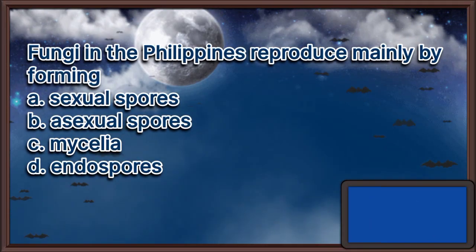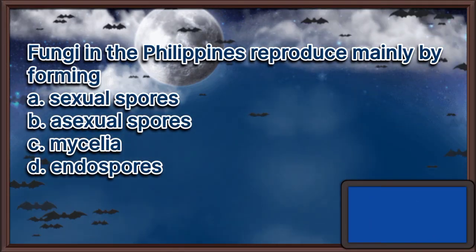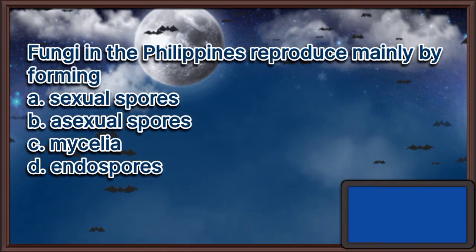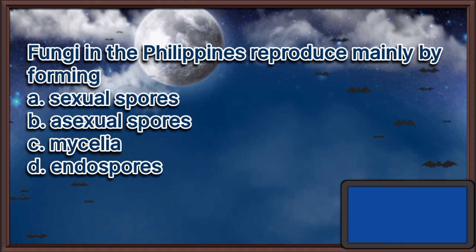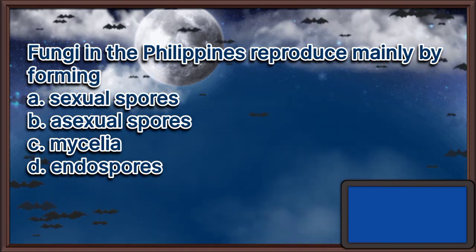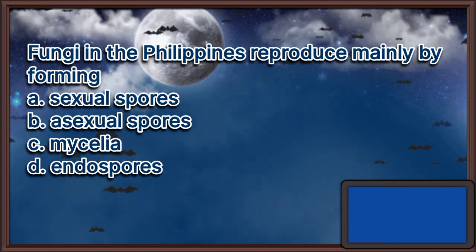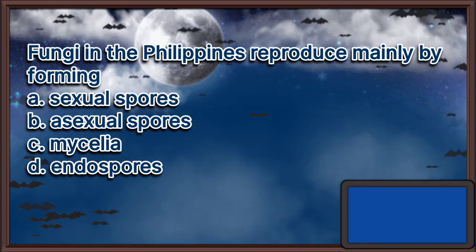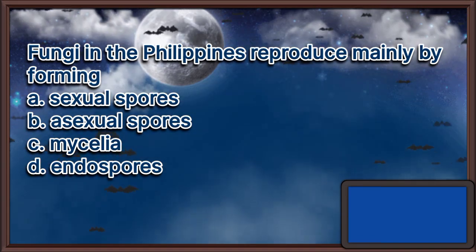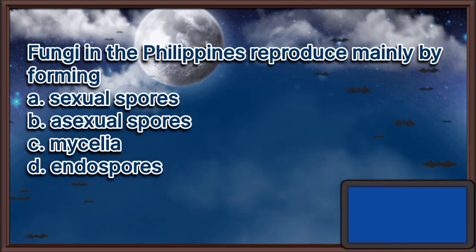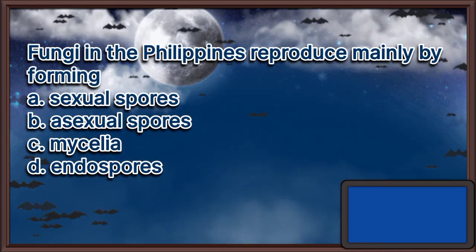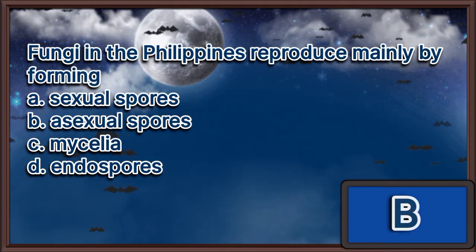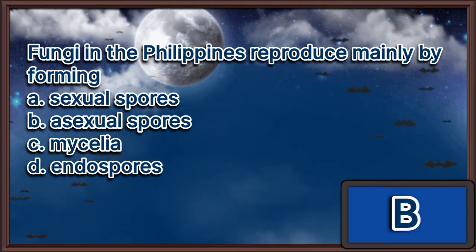Fungi in the Philippines reproduce mainly by forming: A. Sexual spores. B. Asexual spores. C. Mycelia. D. Endospores. The answer is letter B.